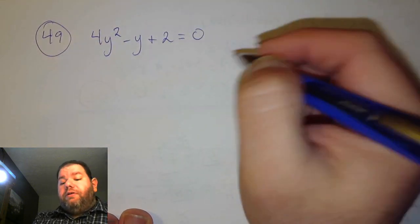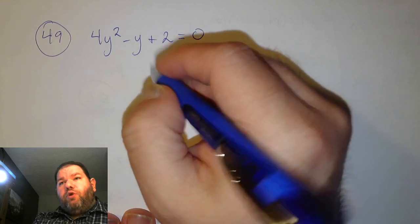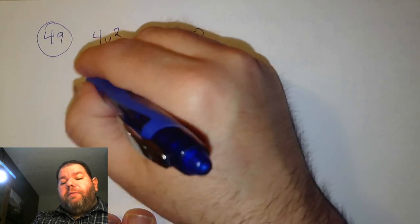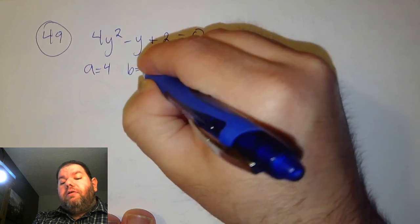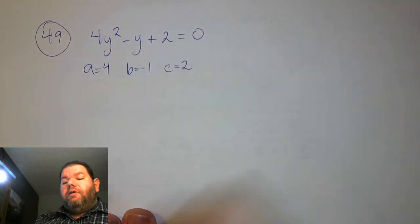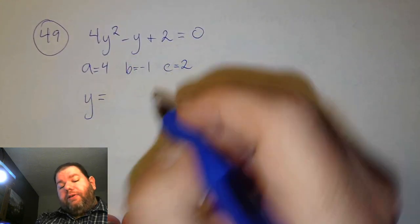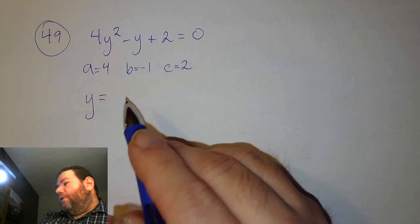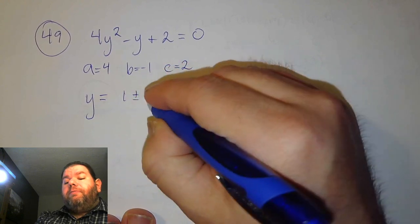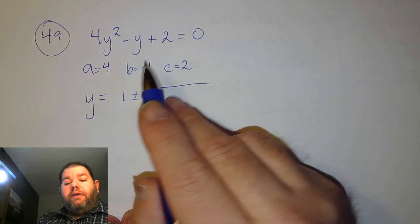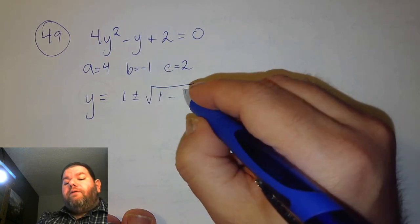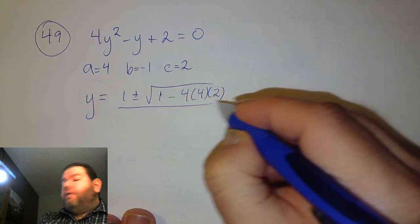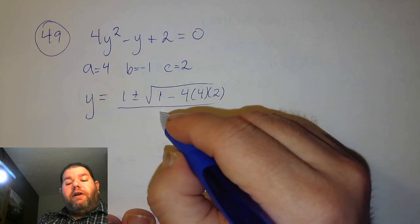Problem 49 is similar to 45 — we just want to plug our values into the quadratic formula. In this case our variable is y, so y equals negative b, the opposite of b, which is positive 1, plus or minus the square root of b squared — negative 1 squared is positive 1 — minus 4 times a, 4, times c, 2. This is divided by 2 times a, which is 8.